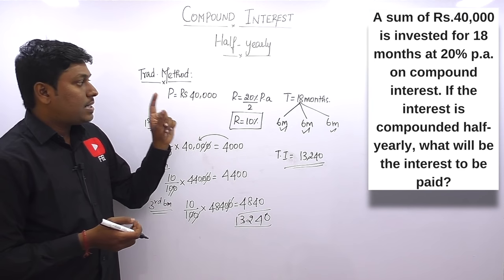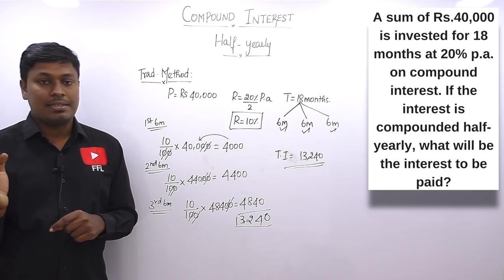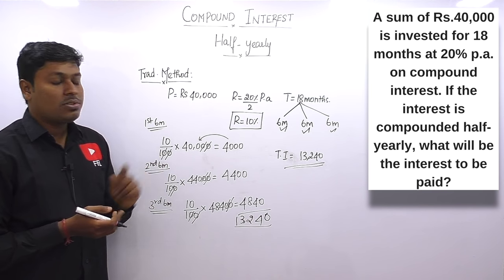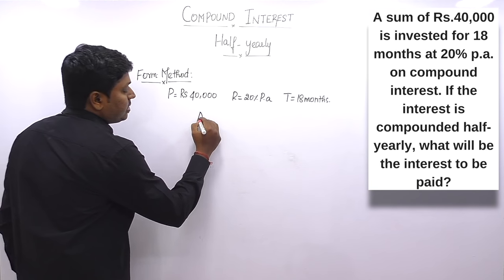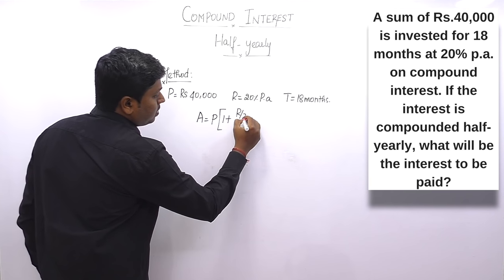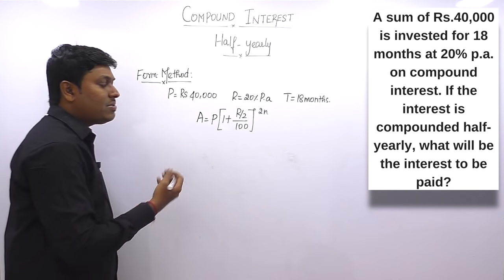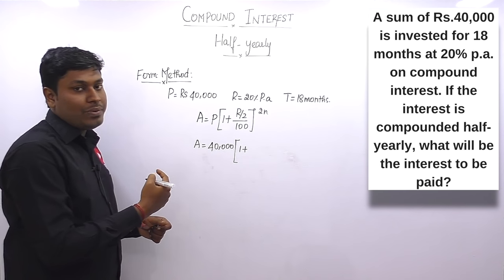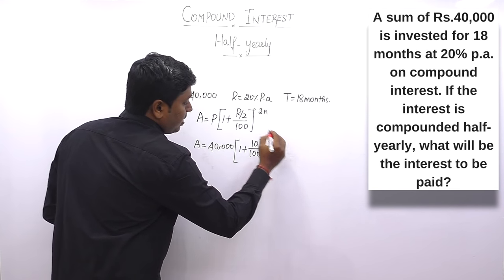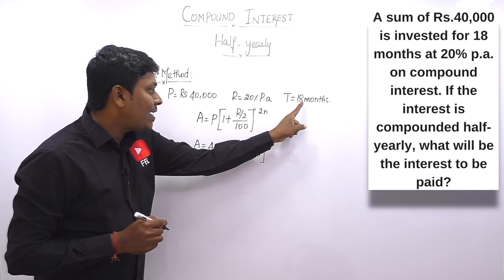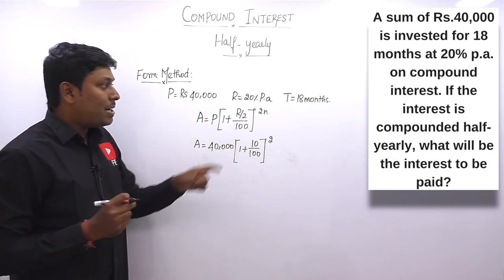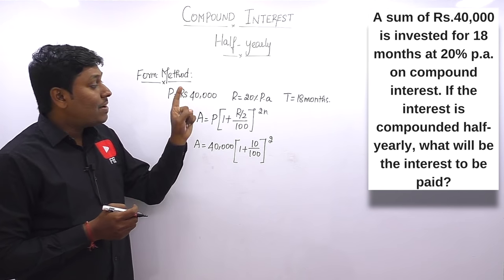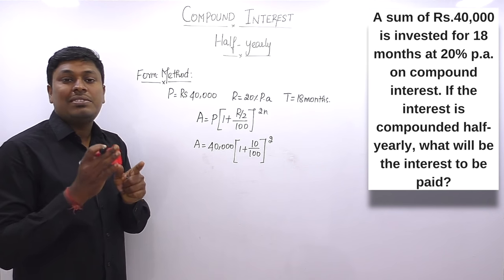So 13,240 is the total interest to be paid, solved by traditional method. Now for the formula method: A = P × (1 + r/2 ÷ 100)^(2n). Substitute: P = 40,000; r/2 = 20/2 = 10; so 1 + 10/100 = 11/10. For n: the time is 18 months. n must be in years, so n = 18 ÷ 12 = 3/2. Power = 2 × 3/2 = 3.